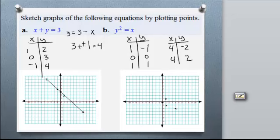(4, -2). And (4, 2). So it looks like a parabola but it's a little bit sideways. Something like that.